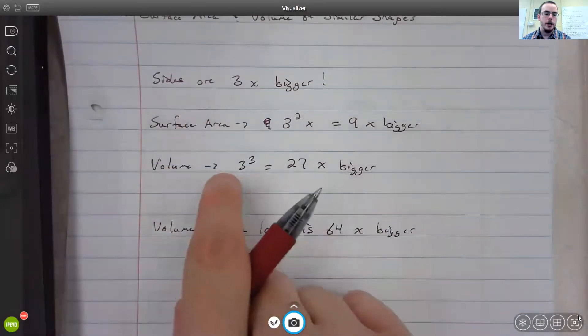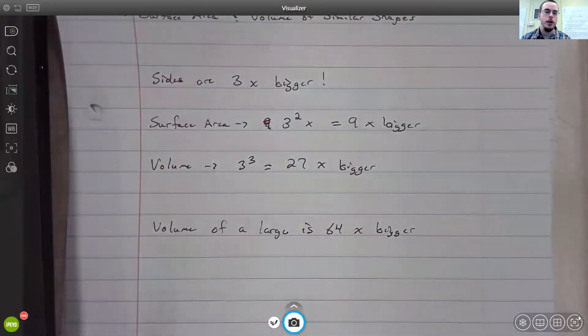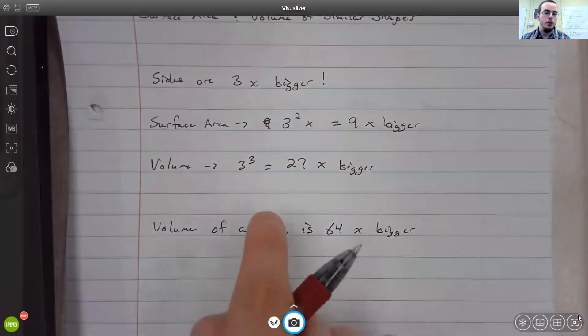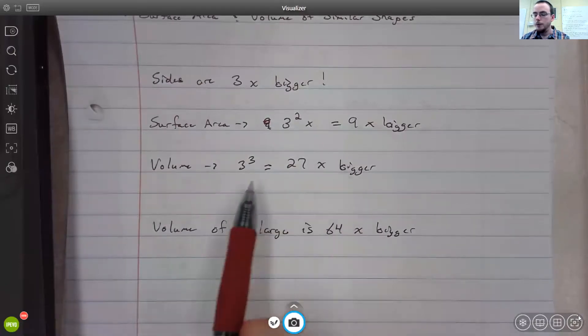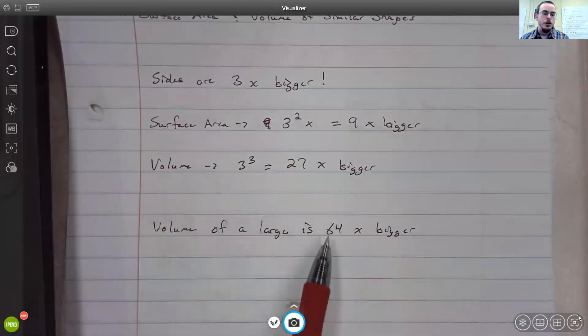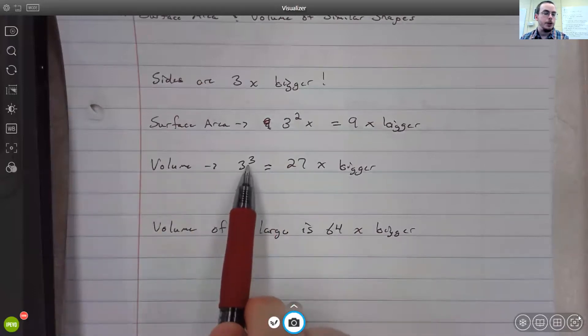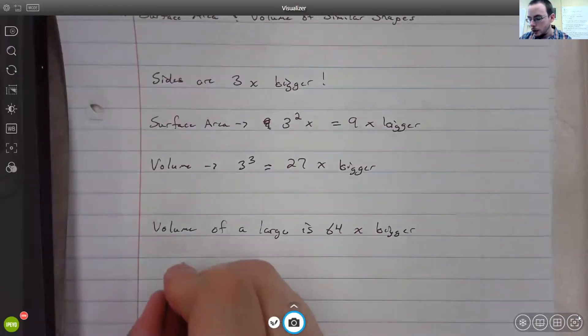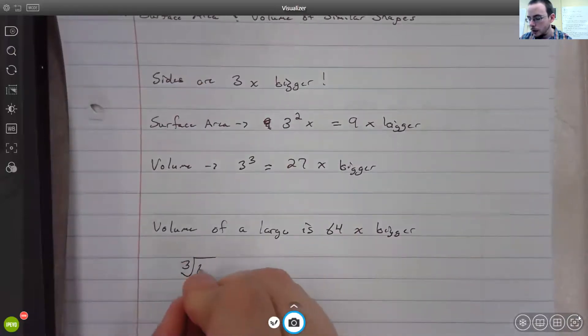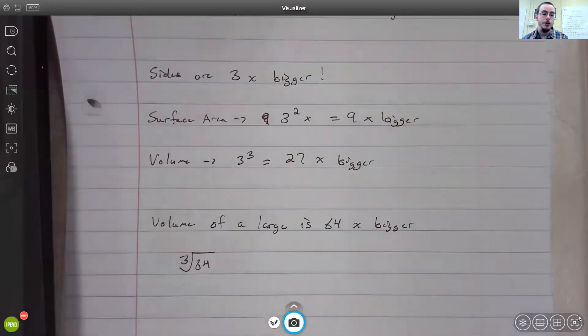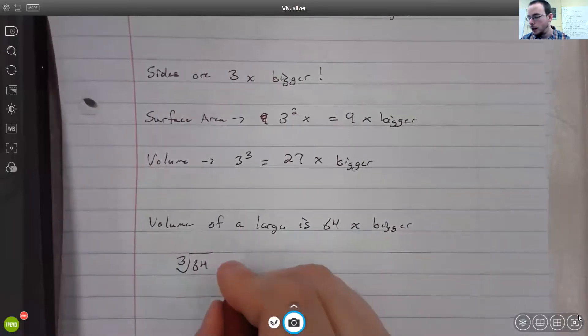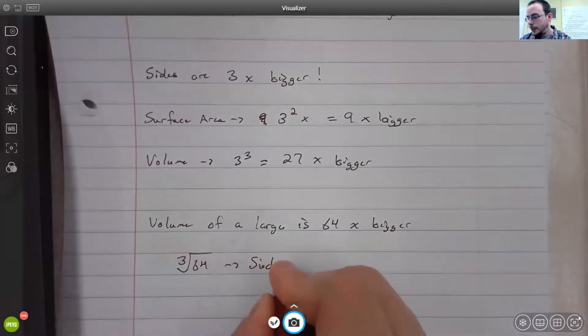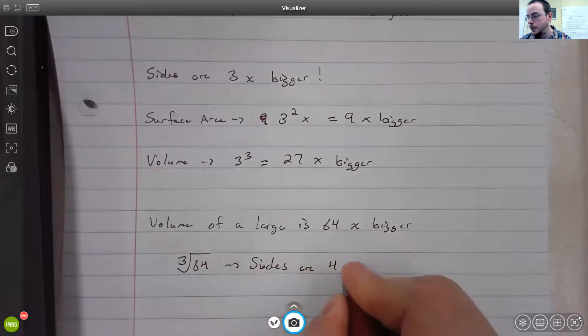Then what you're going to be doing is you're going to be going backwards from the volume to the sides, and this is where the cube roots and square roots come into play here. So if you're going backwards, you are doing the opposite of cubing something, which is cube rooting it. So in your calculator, if you wanted to figure out how much bigger the sides were, you would take the cube root of 64, which means that the sides are 4 times as big.